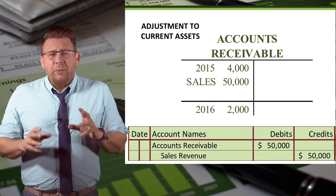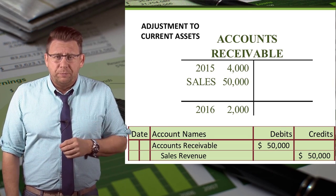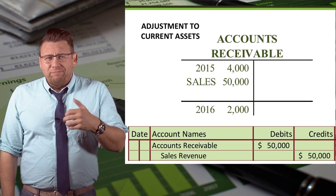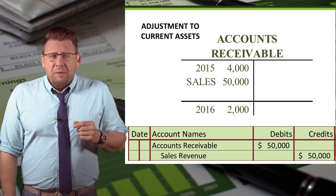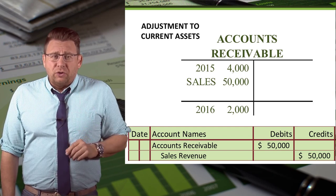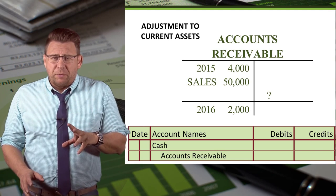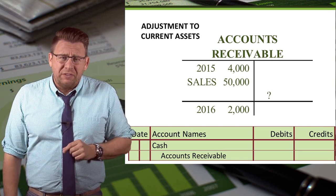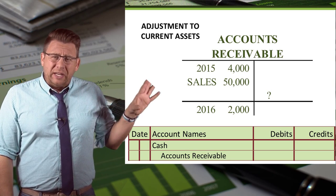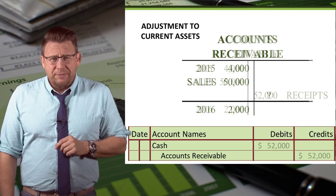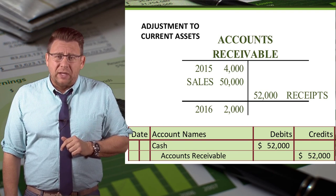When a company records credit sales, it debits accounts receivable and credits sales revenue. In this example, I just made up sales of $50,000 — but it doesn't matter what amount you use, the math is going to work out. When we collect from a customer, we credit accounts receivable. So what amount do we need to make this T-account balance? We need collections of $52,000 to make the account balance.